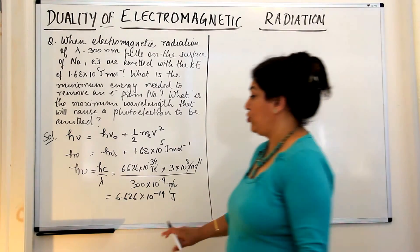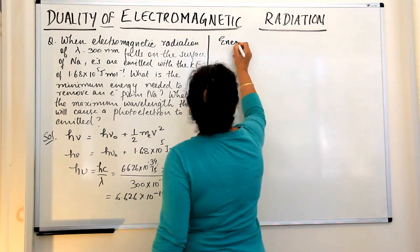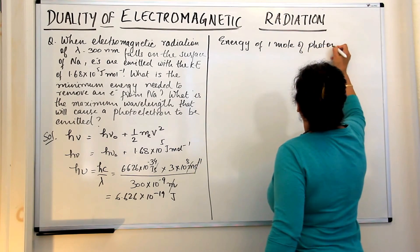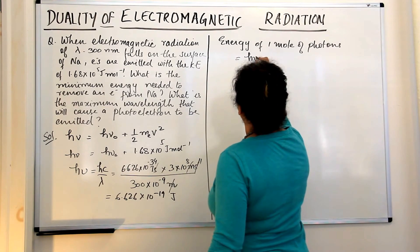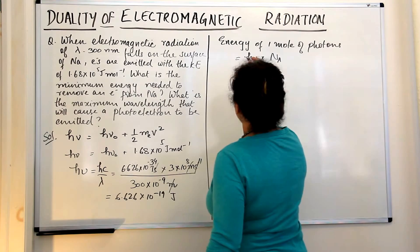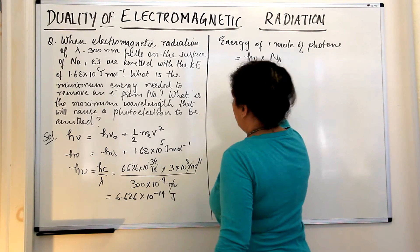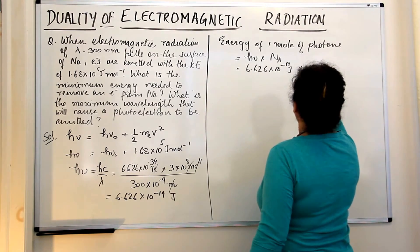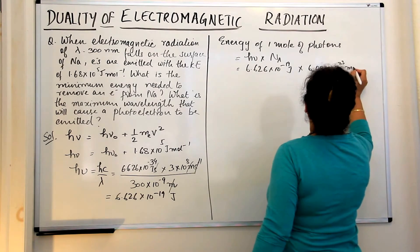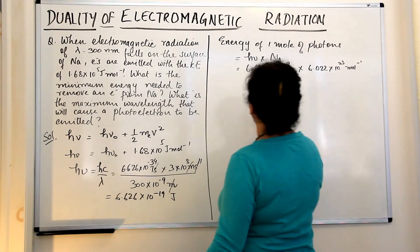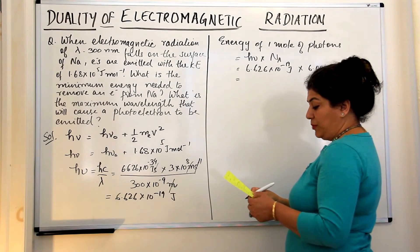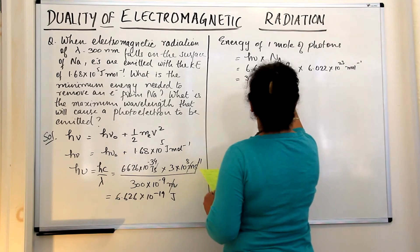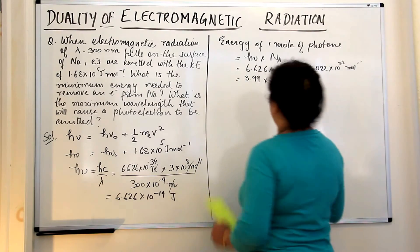The energy for one mole of photons is obtained by multiplying the energy of one photon by Avogadro's number: 6.626 × 10⁻¹⁹ J × 6.022 × 10²³ per mole. This comes out to be 3.99 × 10⁵ joules per mole.